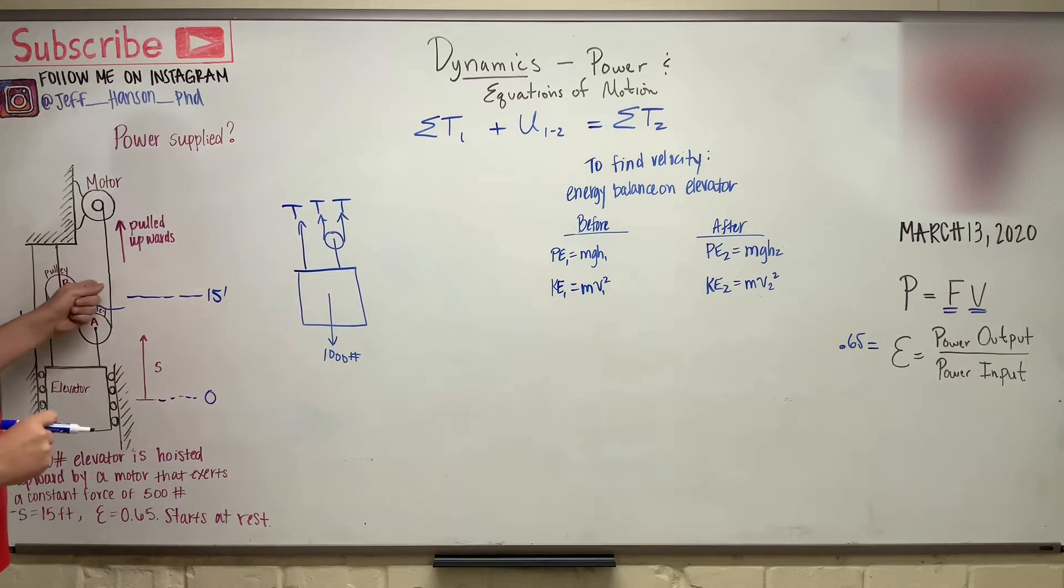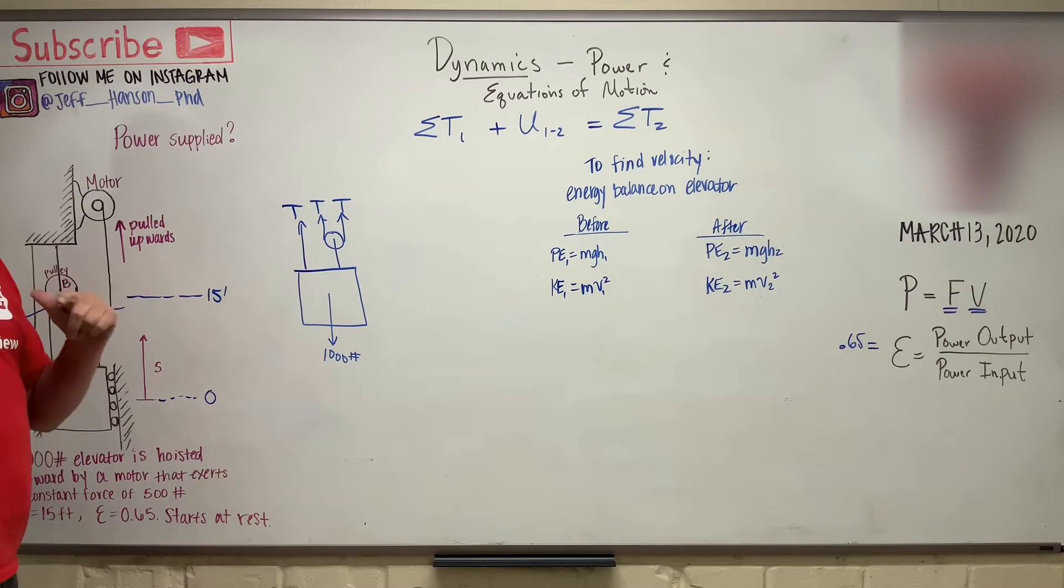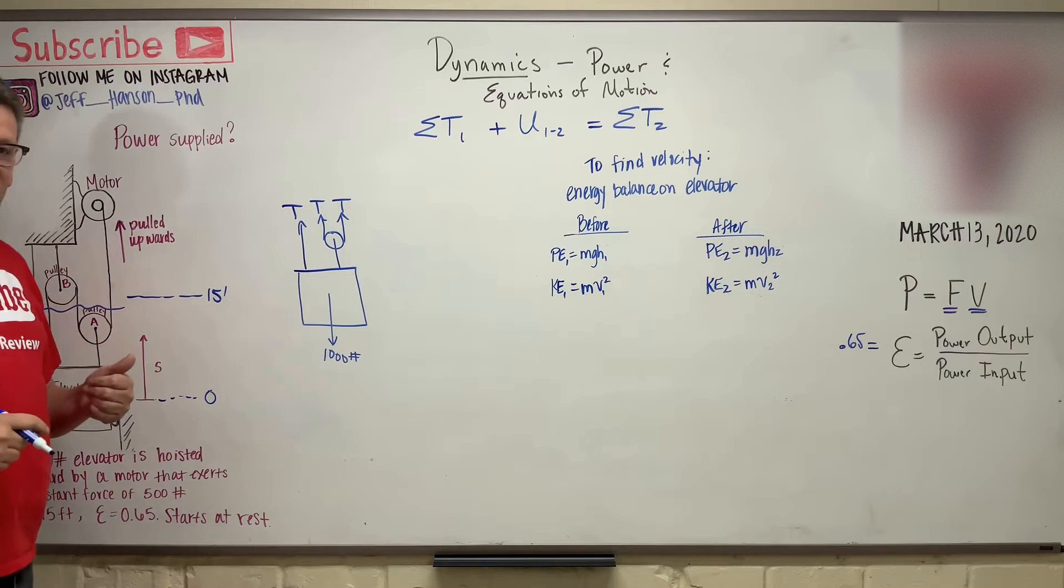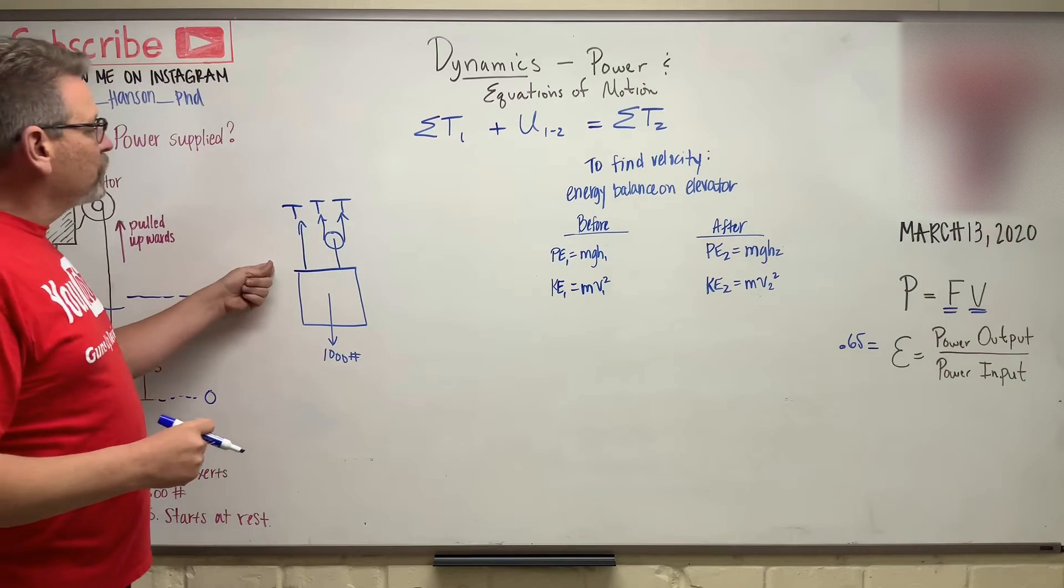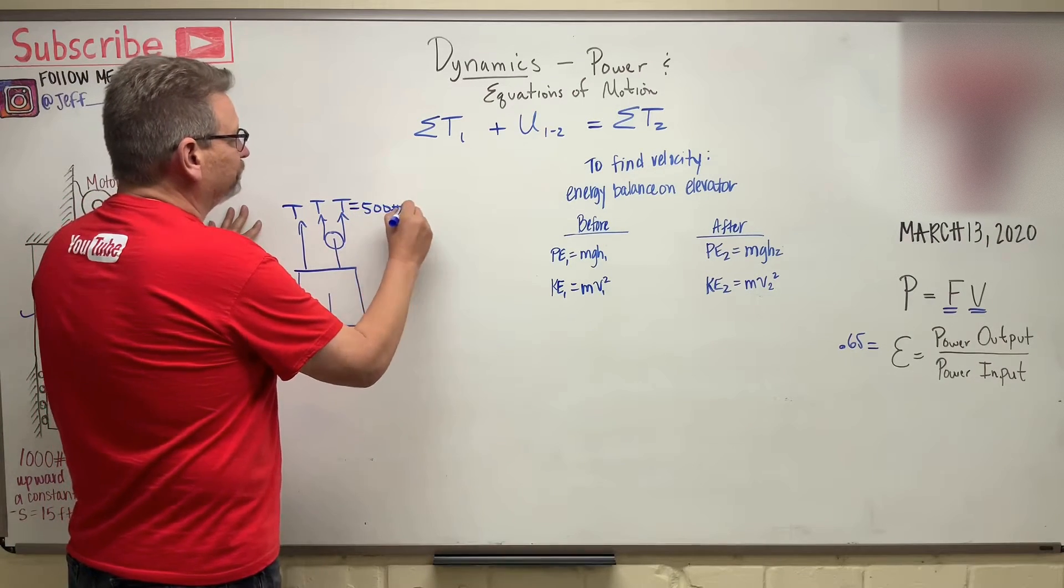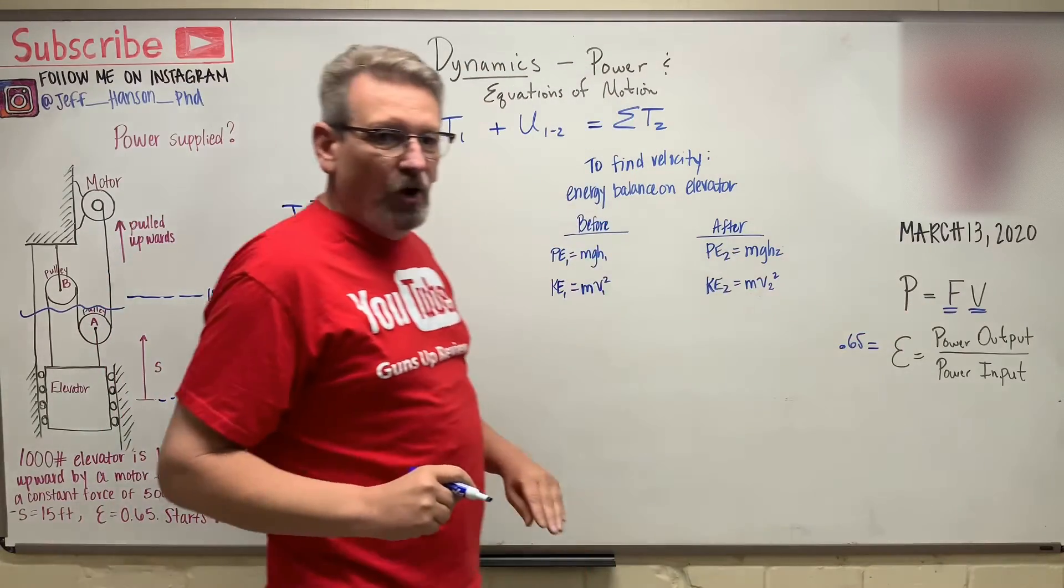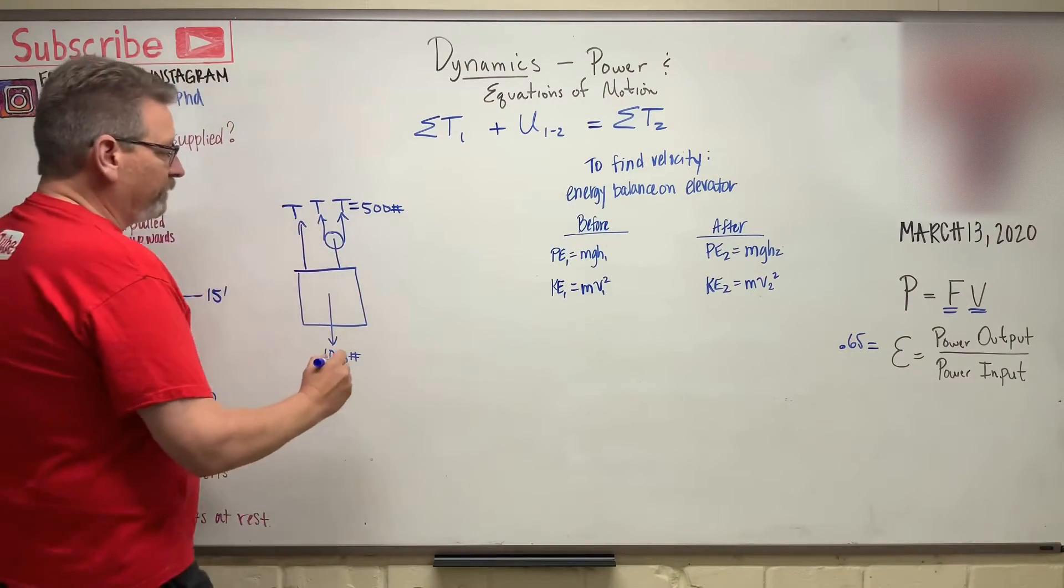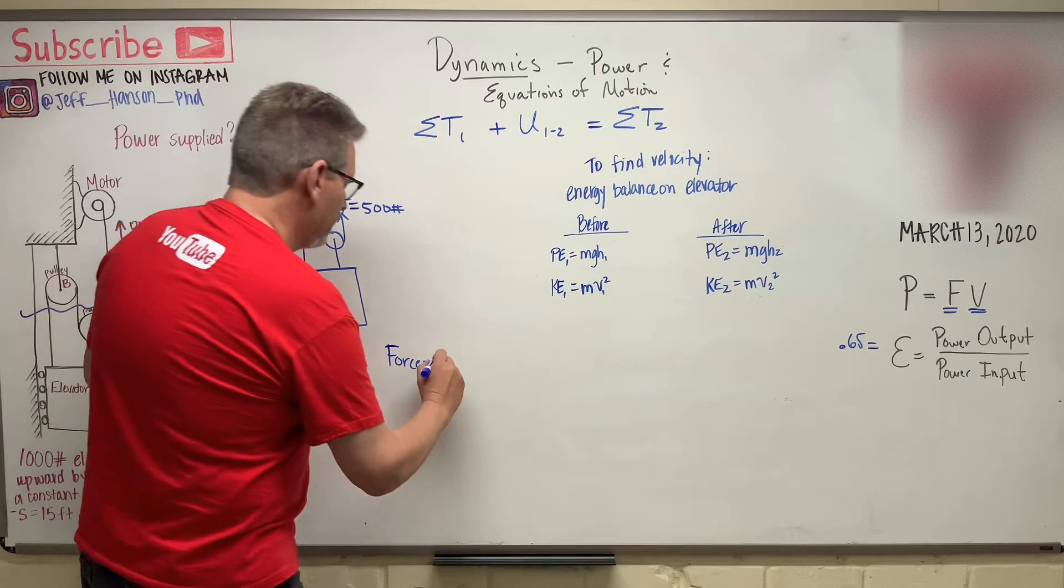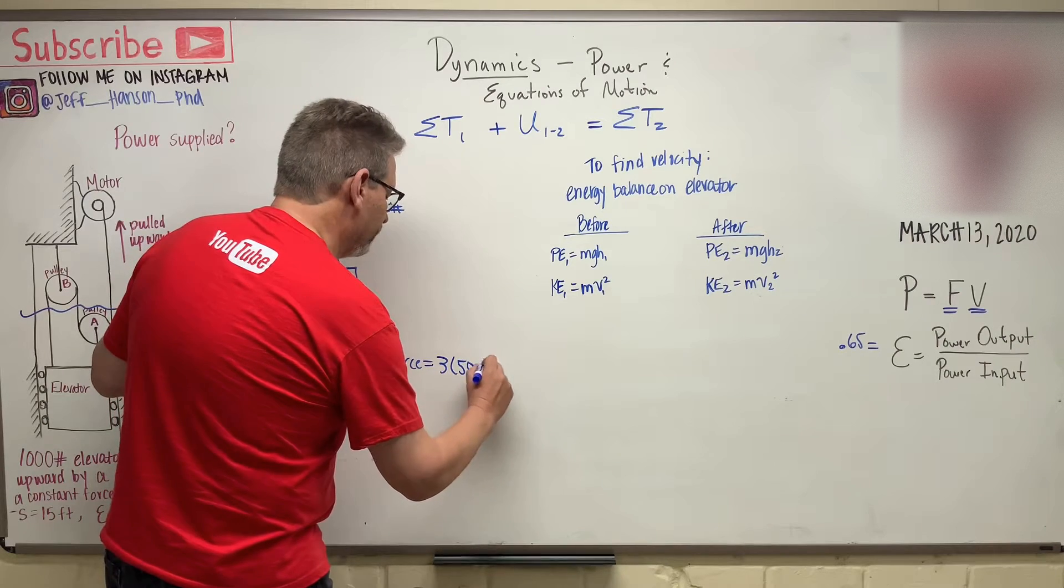Now that's just some good old statics pulley problems. If you don't see that, go back to the statics lesson and look up the pulleypalooza video. There's one almost exactly like this on there. So right now we know that the tension in that cable is 500 pounds. That's given. So what's the force that's going to be acting on the elevator? Well, the force on the elevator is going to be equal to 3 times 500 pounds.